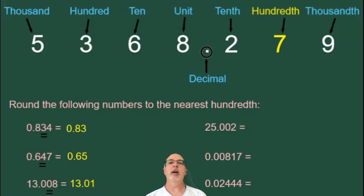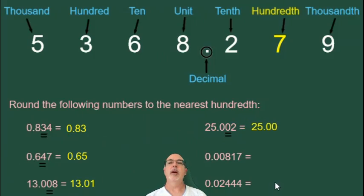Now we have 25.002. This second 0 is in the hundredth position, and the number to the right of it is a 2, which is smaller than 5, so we're rounding down. Our answer is 25.00. You might think that's the same as 25, and in fact it is the same number as 25, but we still have to show the .00 so that we can show our number is rounded to the nearest hundredth.